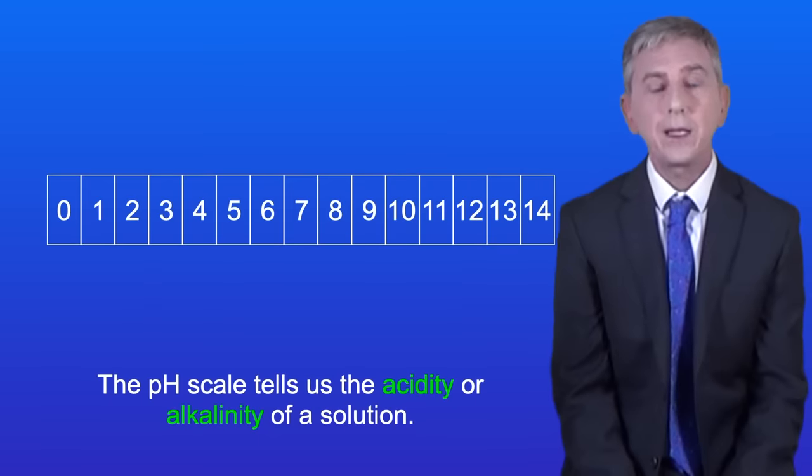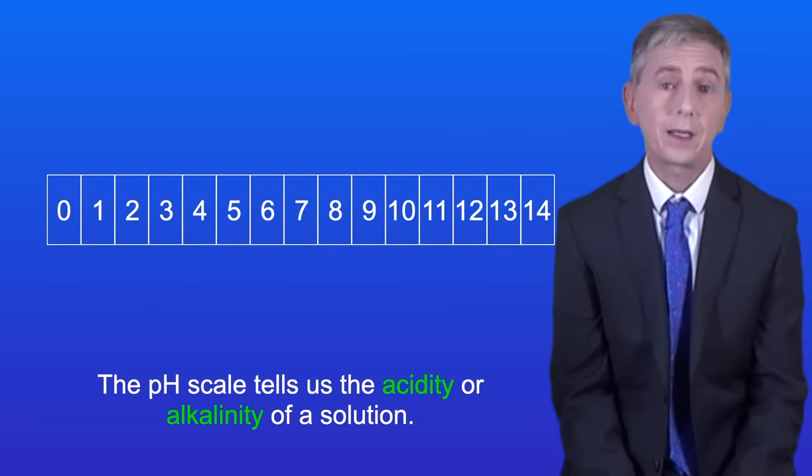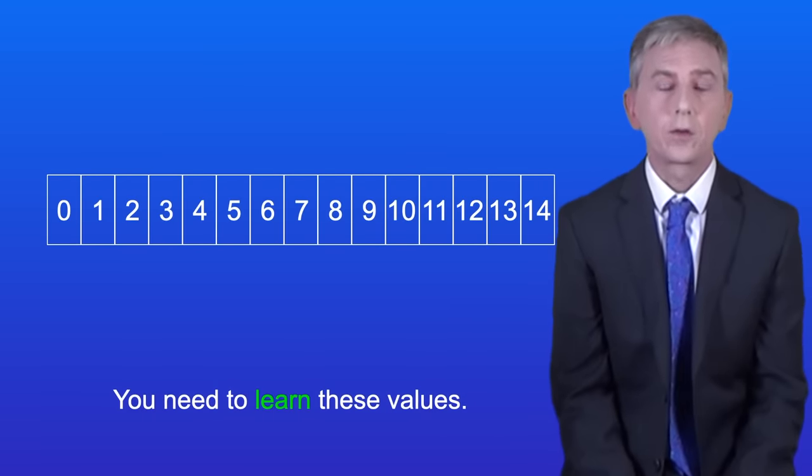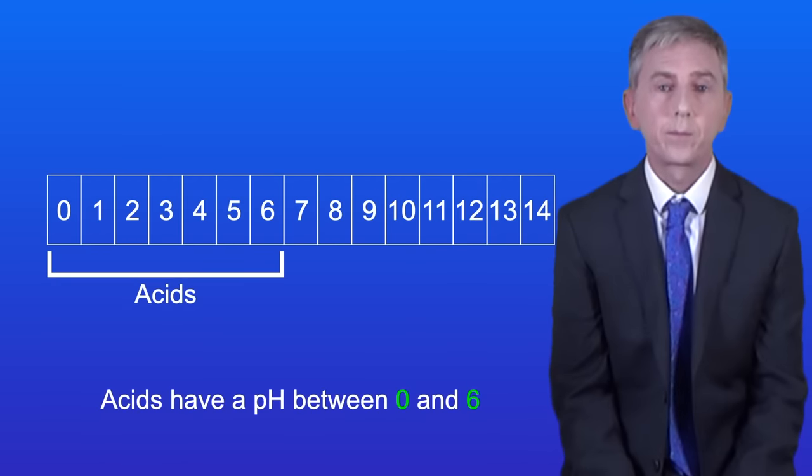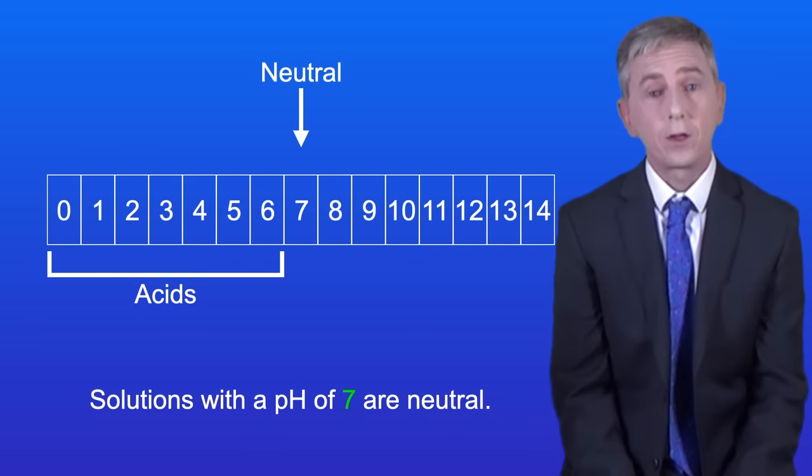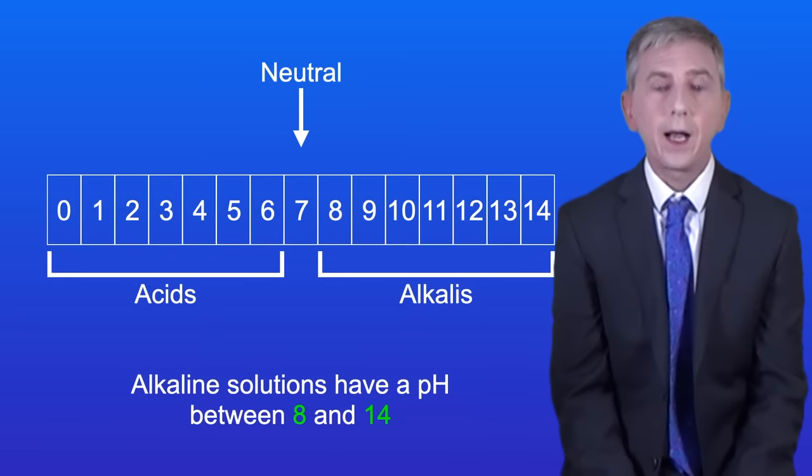Now the pH scale tells us the acidity or alkalinity of a solution and you need to learn these values. Acids have a pH between 0 and 6. Solutions with a pH of 7 are neutral and alkaline solutions have a pH between 8 and 14.